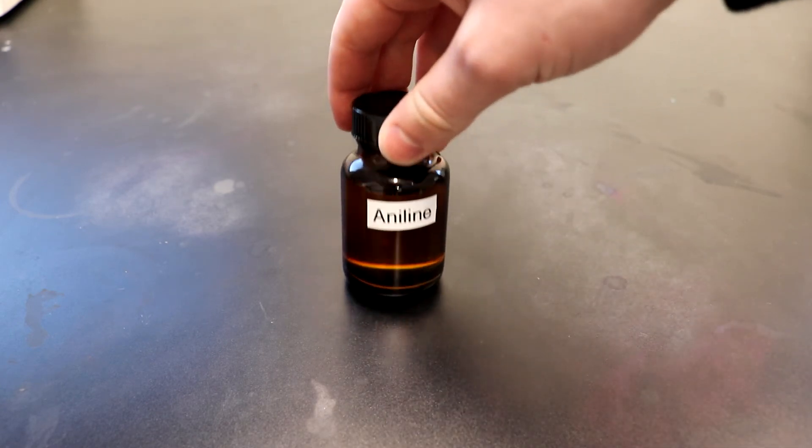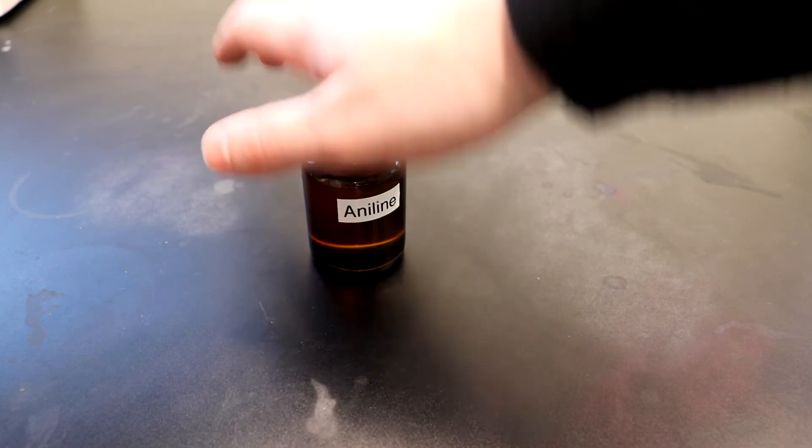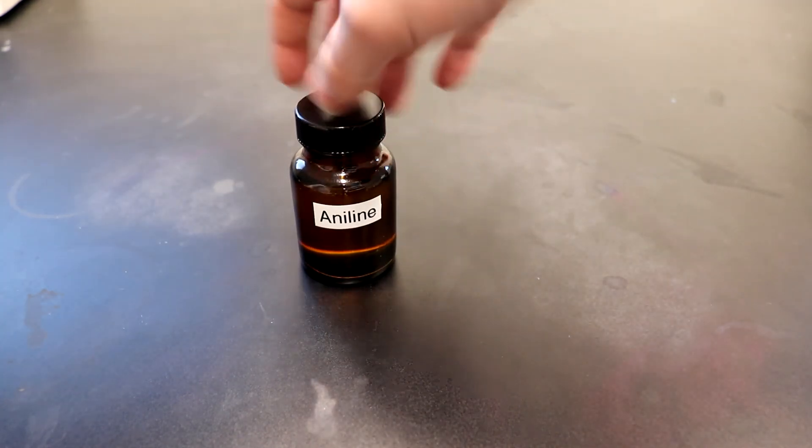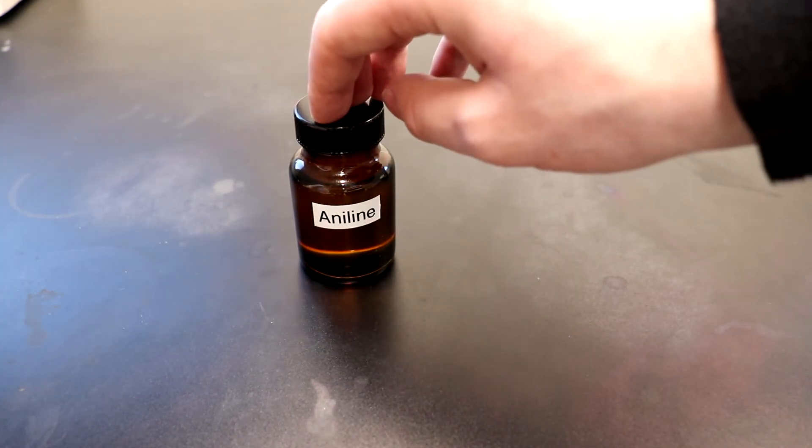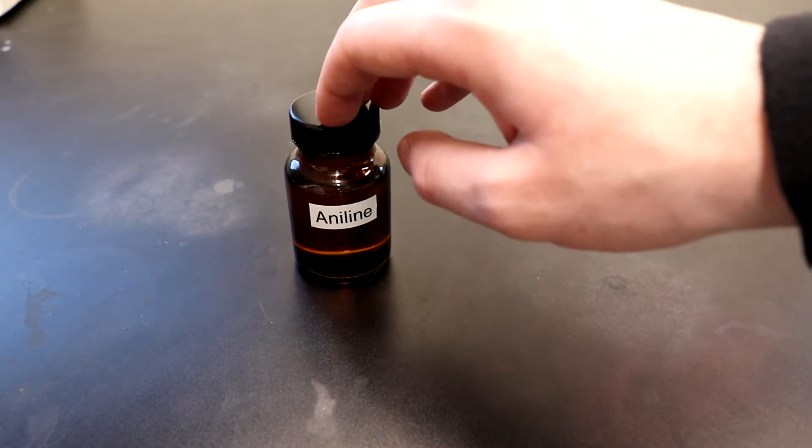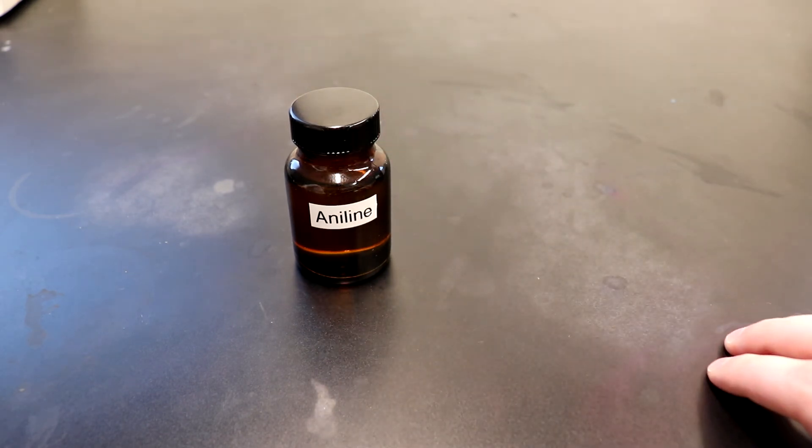And the reason that 56.6 grams is such a low yield is because we added the 23.5 grams earlier just to purify it. So that brings our actual yield from the 80 grams of PABA to around 34-33 grams of aniline.